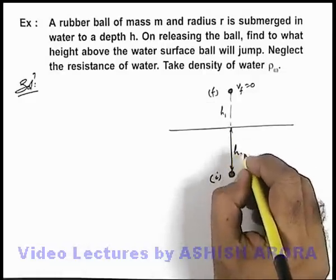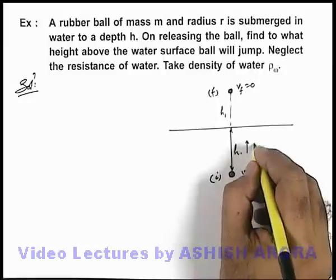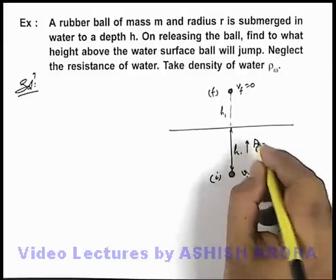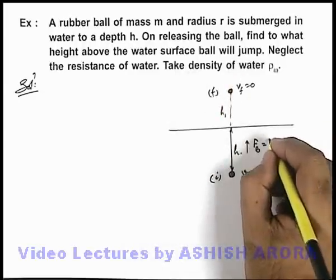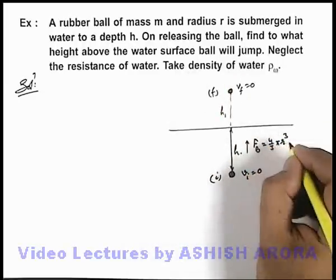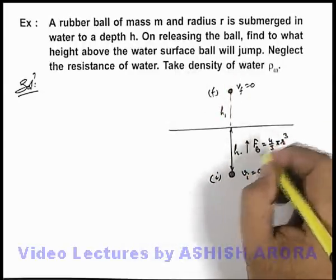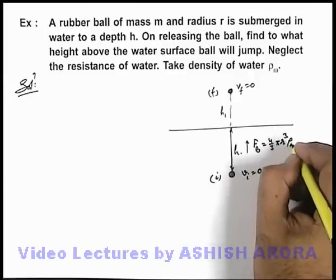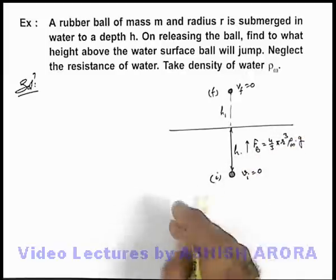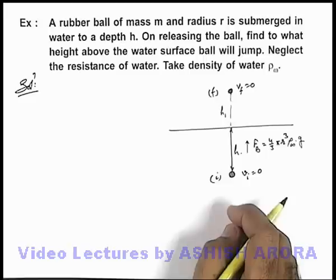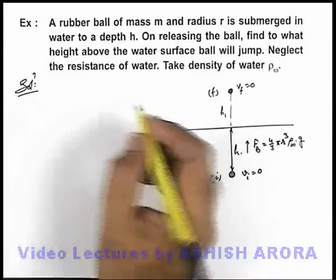When it is inside water, it is acted upon by the buoyant force. The value of buoyant force can be written as (4/3)πr³ρ_w g, which is the volume of the ball multiplied by the density of water and g.